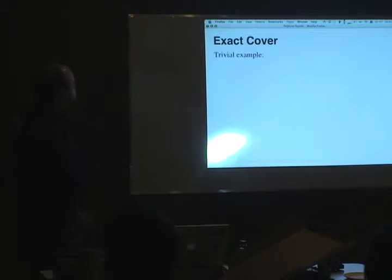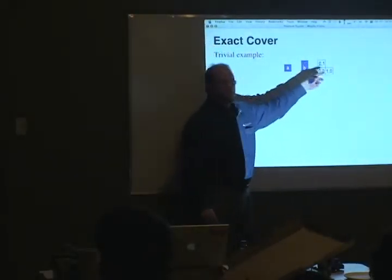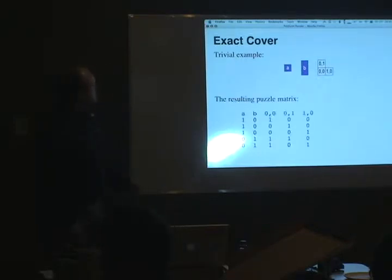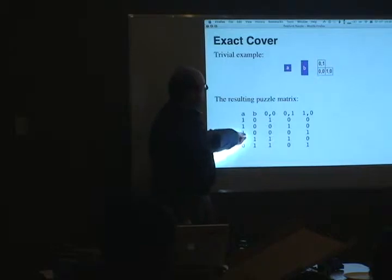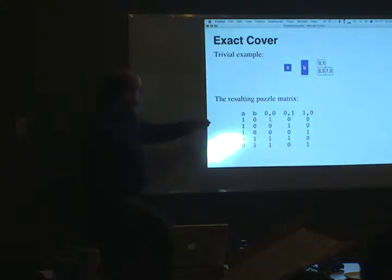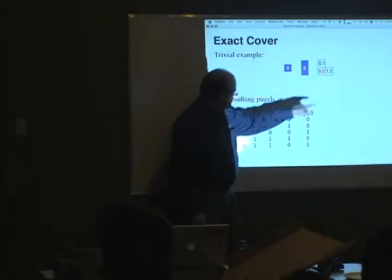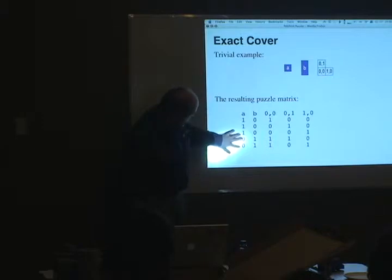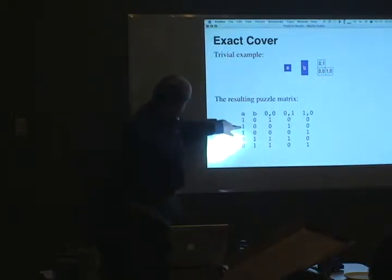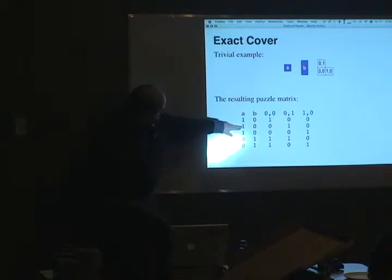Here's a trivial example: a puzzle of two pieces A and B fitting into a space three squares big. The puzzle matrix has three possible positions for A and two possible positions for B if you allow rotation. Looking at this matrix: if you put A at position zero-zero and zero-one, there's no B row that matches. But if you put A at zero-one, then you can find a B that covers the other two squares — those two rows combine to make a solution. That's the kind of thing we're dealing with.